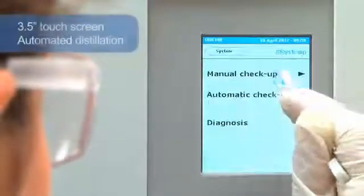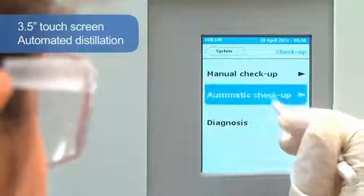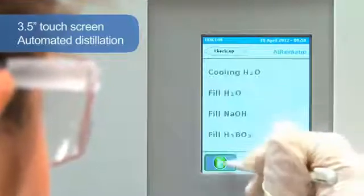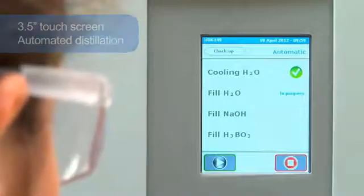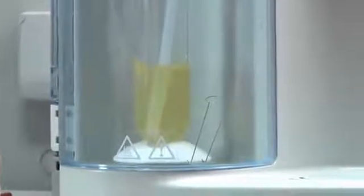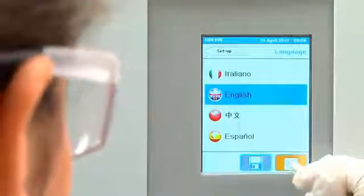With a 3.5-inch touchscreen color display, the UDK 149 achieves automatic distillation through alkali, dilution water and receiver solution addition, with pre-programmed distillation protocols and reaction times. It provides regulated steam output and conveniently automatic draining of sample residues. The most commonly used languages are pre-installed.